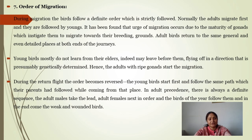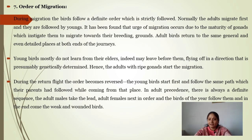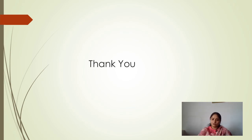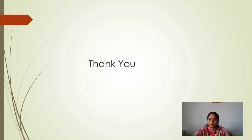During the return flight the order becomes reversed — the young birds start first, following the same path their parents had followed. In adult precedence, the adult male takes the lead, adult female is next, then birds of the year, and finally weak and wounded birds. This is all about the migration of birds — types and modes. In the next video we will study the causes, advantages, and disadvantages of migration.